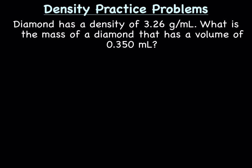Diamond has a density of 3.26 grams per milliliter. What is the mass of a diamond that has a volume of 0.35 milliliters? We're going to use the same equation, density equals mass over volume. But this time, we know density and volume, and we're trying to calculate mass.